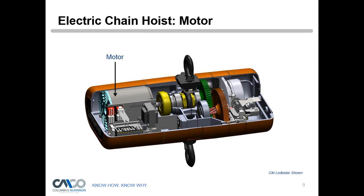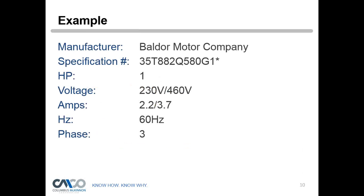Here we have an electric chain hoist — you could have a large wire rope hoist or a smaller electric chain hoist, but in general any electric hoist will have an electric motor. It can be powered by single phase or three phase. Voltage could be 230 or 460 volts three-phase, or 115 or 230 volts single-phase. Knowing the proper voltage for installation is essential. In the USA we use 60 Hz; Europe uses 50 Hz. Our hoists are both dual-voltage and dual-frequency rated so they will run in both applications.